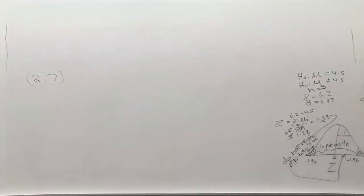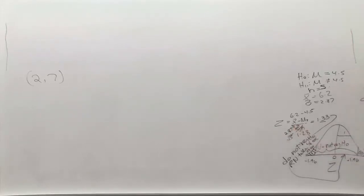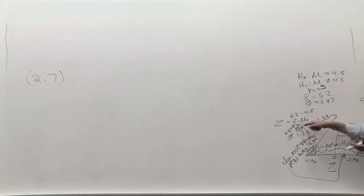What we did in Chapter 8 is we substitute, instead of the sigma, we substitute the next best thing, which was the standard deviation of the sample. The sample is not the whole population, but it's better than nothing. And when you do that, you introduce more uncertainty into the whole process because this number here is not a perfect representation of the sigma.